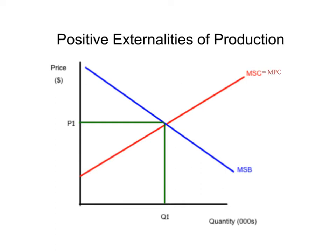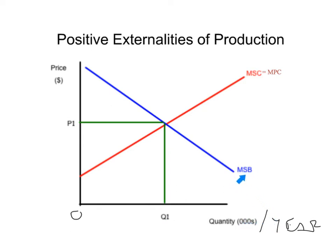Let's take a look at this graph. This is the original rule-of-11 graph — this is where all externality graphs start. You have price, currency, P1, zero, Q1, quantity, units per year. The marginal social benefit curve is the old demand curve renamed, and the marginal social cost curve is the old supply curve renamed. Think about the marginal social cost and marginal private cost as two lines on top of each other, and likewise the marginal social benefit and marginal private benefit as two lines here.